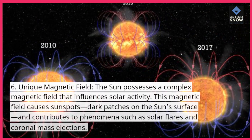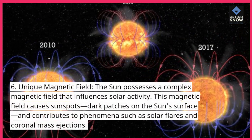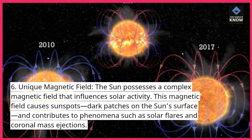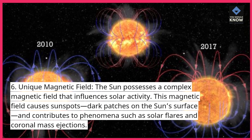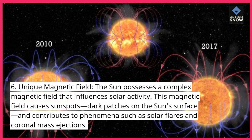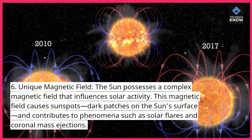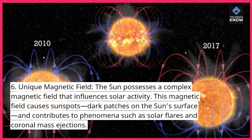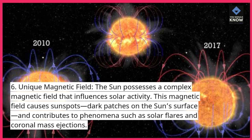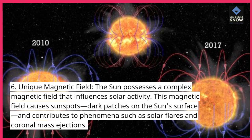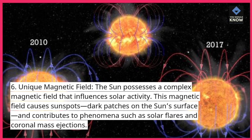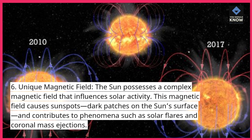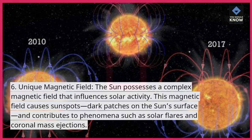Unique magnetic field: the sun possesses a complex magnetic field that influences solar activity. This magnetic field causes sunspots — dark patches on the sun's surface — and contributes to phenomena such as solar flares and coronal mass ejections.